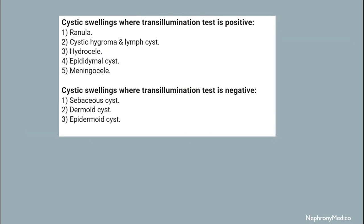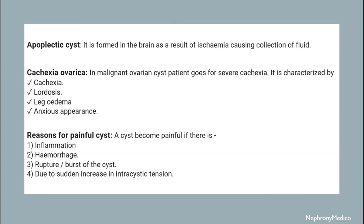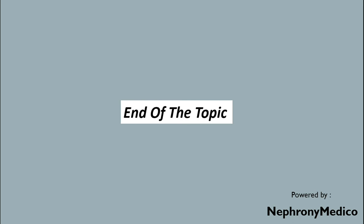Cystic swellings where the trans-illumination test is negative include sebaceous cyst, dermoid cyst, and epidermal cyst. Apoplectic cyst is formed in the brain as a result of ischemia causing collection of fluid. Cachexia ovarica refers to cachexia, lordosis, leg edema, and anxious appearance in a patient with malignant ovarian cyst. Reasons for a painful cyst include inflammation, hemorrhage, and rupture — most commonly due to sudden increase in intracystic tension. End of the topic.